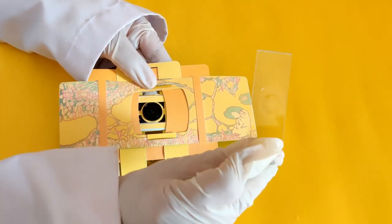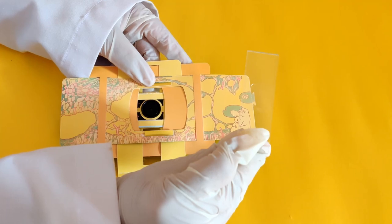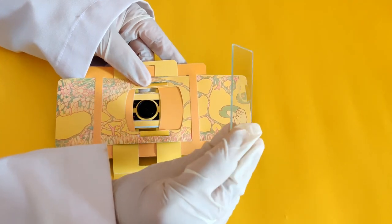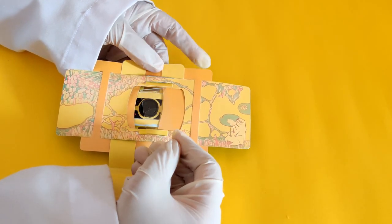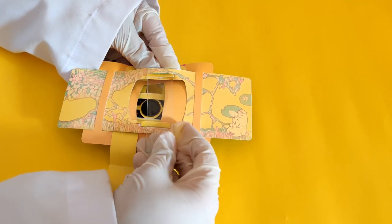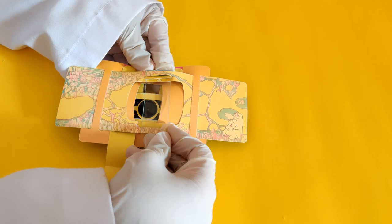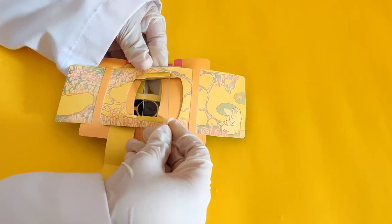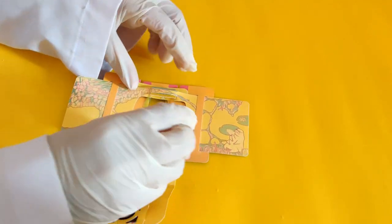Flip the foldscope to the yellow side. Make sure the water sample side of the glass slide is facing the lens in the foldscope. Insert the glass slide into the two slits in the sample stage of the foldscope.